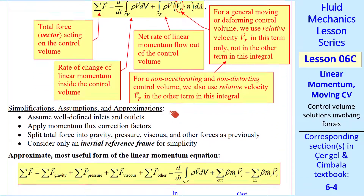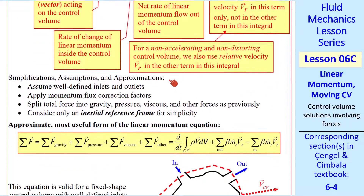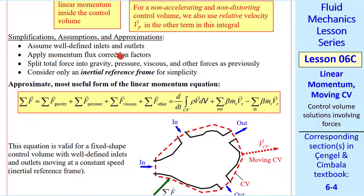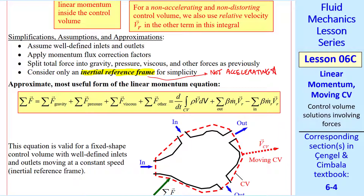For this lesson, we make the following simplifications, assumptions, and approximations: we have well-defined inlets and outlets, we use the same momentum flux correction factor as previously, we split total force into gravity, pressure, viscous, and other forces, and we consider inertial reference frames only. That means the control volume is not accelerating — in other words, it's moving at constant speed.